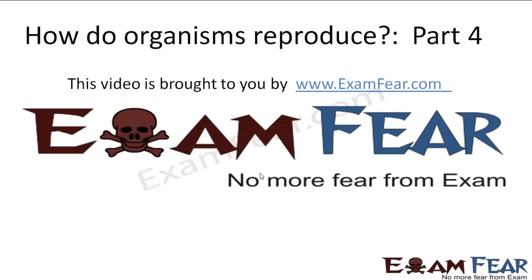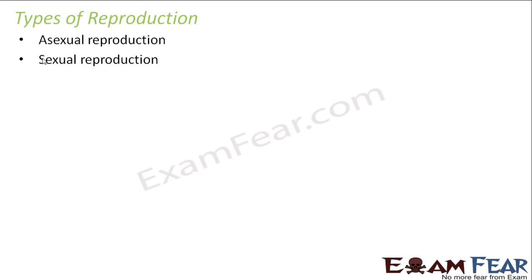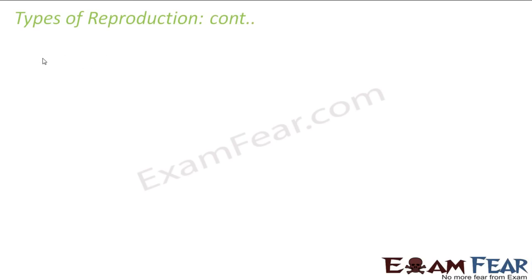Hello friends, this video on how do organisms reproduce, part 4, is brought to you by examfear.com. Now that we have understood the basics of reproduction, let us look at the different types of reproduction. Broadly, reproduction is classified into two types: asexual reproduction and sexual reproduction. These are the two broad patterns of reproduction.